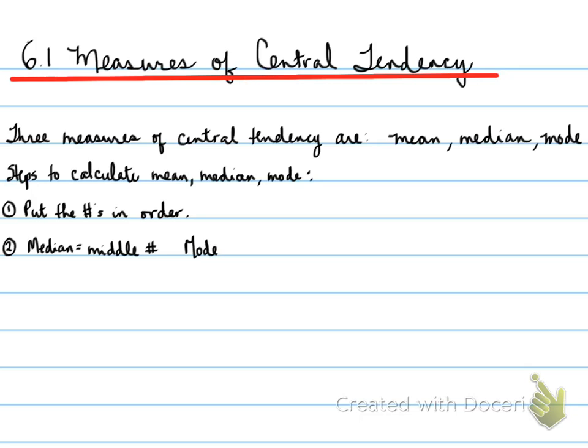The median is the middle number. So if you were to find the middle number, what you would have to do is calculate the number of numbers, add one, and divide by two. Here's why.